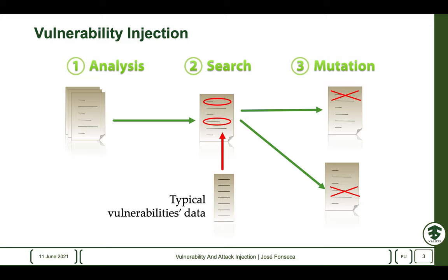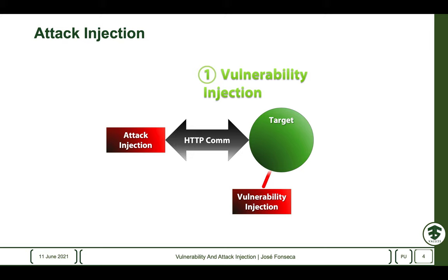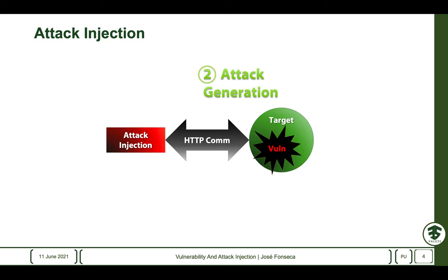The attack injection component is responsible for attacking vulnerabilities injected by the vulnerability injection component. This works by injecting a single vulnerability at a time. Then, the idea is to create a set of attacks specifically tailored based on the type of vulnerability and on the location where it was injected.